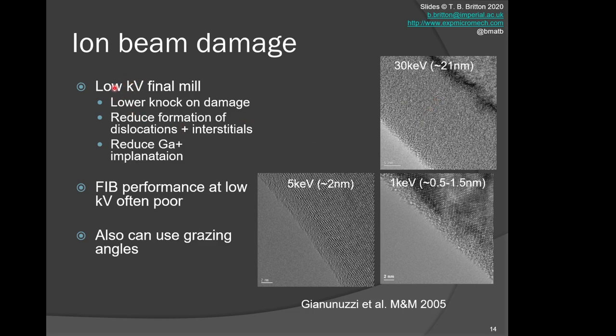This is why when we do sample preparation, we will often do a low kV final mill to reduce the knock-on damage, reduce the formation of dislocations and interstitials, and reduce the gallium implantation. We note, however, that most FIBs have poorer performance at low kV, so we will typically do incremental polishing—effectively high voltage and then step it down for the final polishing steps. In addition to reducing the polishing damage, we can do this at glancing angles. If you did direct implantation, it would cause a greater penetration depth, whereas if you did it at a high, steep angle, that will reduce the amount of surface damage as you're glancing away that surface of the material.